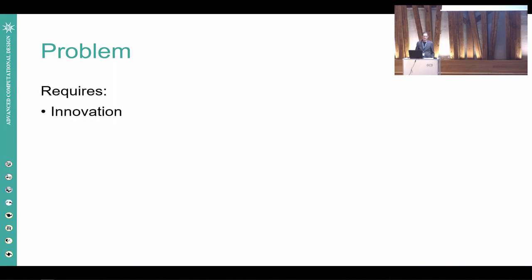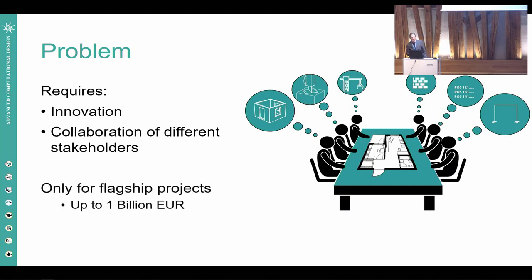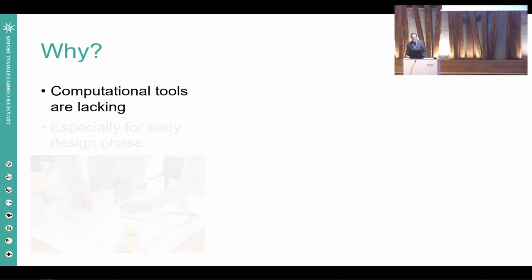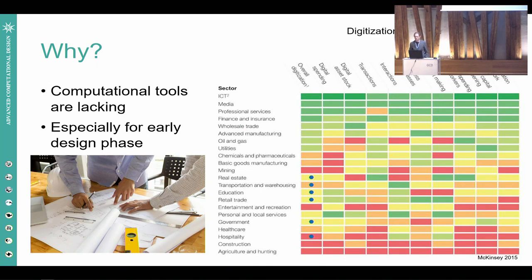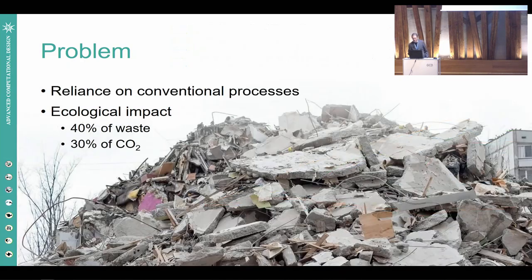Innovative design requires the collaboration of many different stakeholders, and this is currently very costly and difficult, done only for flagship projects at enormous cost. Furthermore, the results are usually only prototypes, and the insights from them are usually not reusable or generalizable because they are not really based on basic research. We believe the reason is a lack of computational tools, especially for collaboration in the early design phase, which could help reduce fragmentation. In fact, if we look at digitization of different sectors, construction resides at the very bottom of this list, right next to agriculture and hunting. Therefore, this sector faces stagnating productivity and innovation.